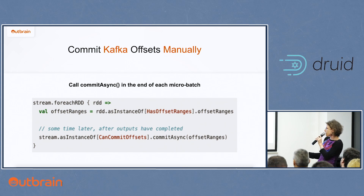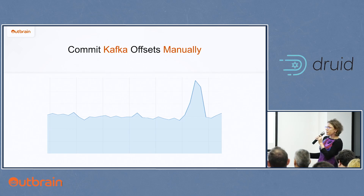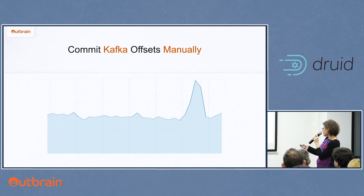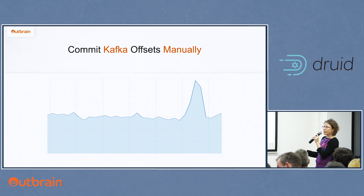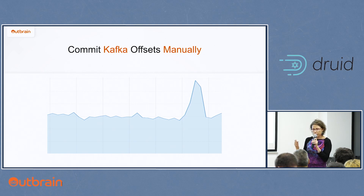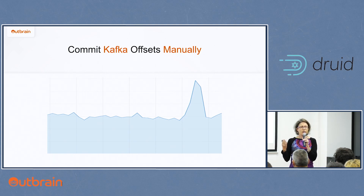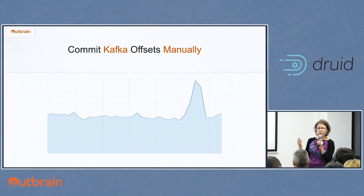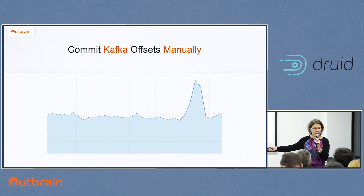After implementing manual offset commits according to the Spark Streaming guide, I still saw the spike. It happens because we can shut down the application in the middle of RDD processing — in that case we still have duplicate events. In our scale, sometimes we have 30 million events in a two-minute micro-batch. So this was still not good enough — we needed a better solution.